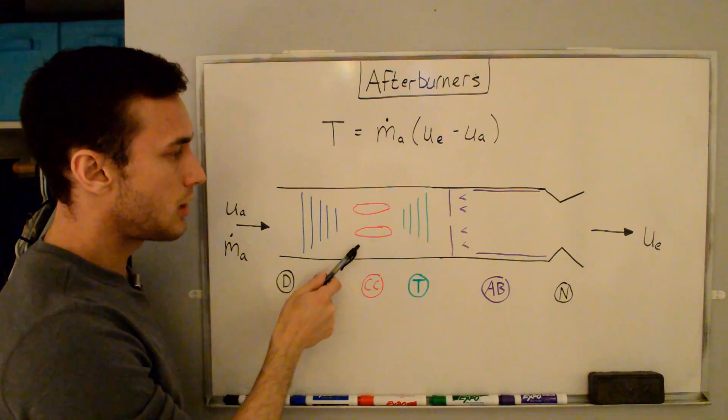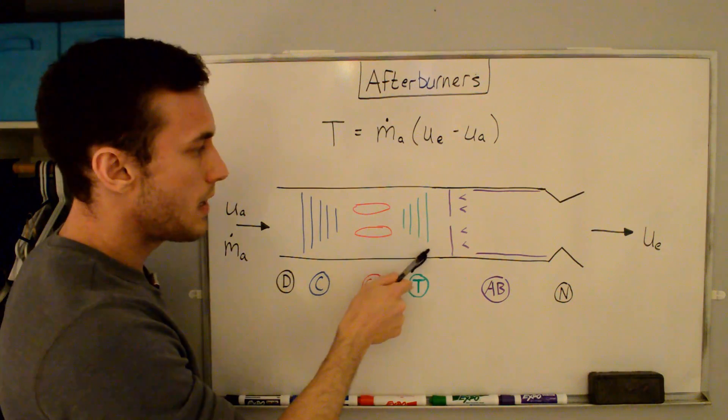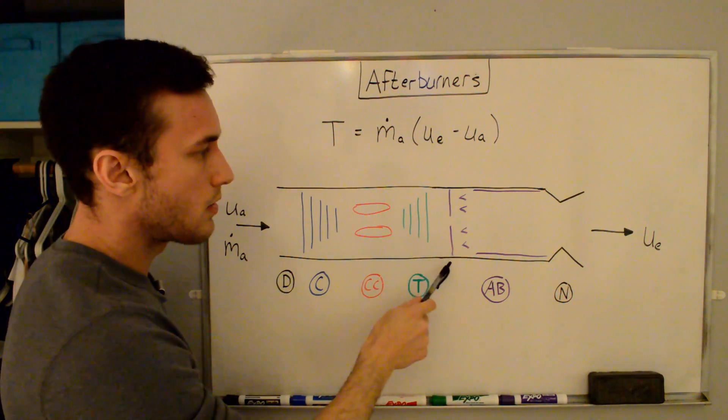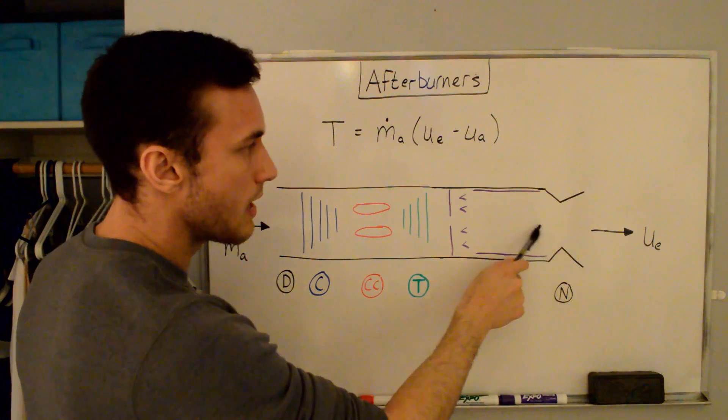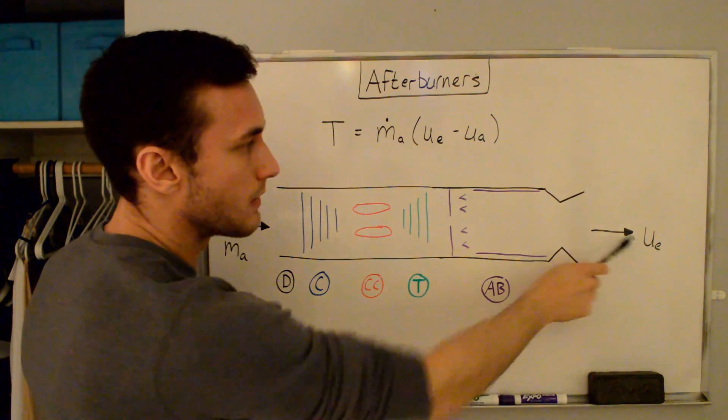Gets mixed in with some fuel in the combustion chamber, ignited, comes out the turbine. The turbine powers the compressor, and then if we have an afterburner, it goes through the afterburner and then out this nozzle at an exit velocity of UE.